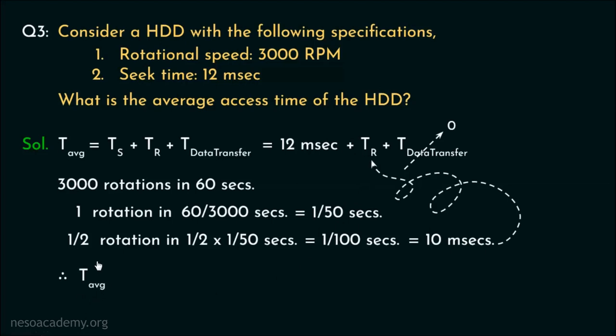Therefore, the average access time of the hard disk is, 12 milliseconds, that is, the seek time, plus 10 milliseconds, which is the average rotational delay, which results in 22 milliseconds.